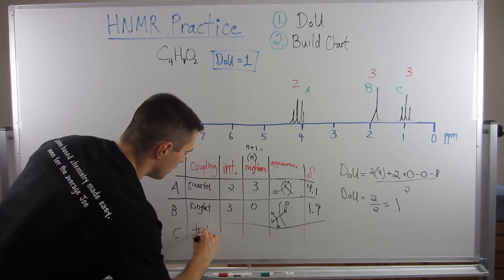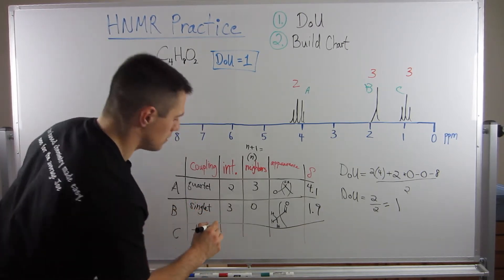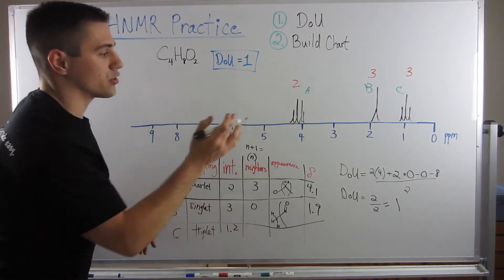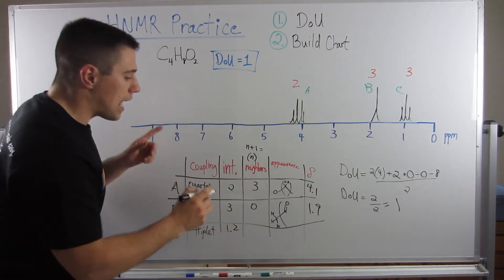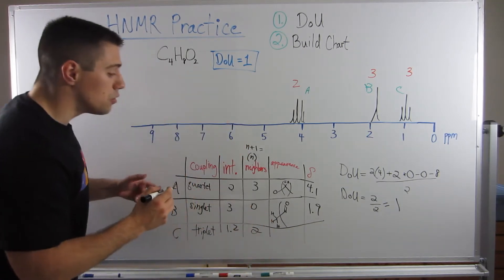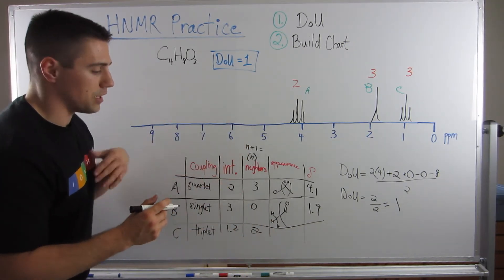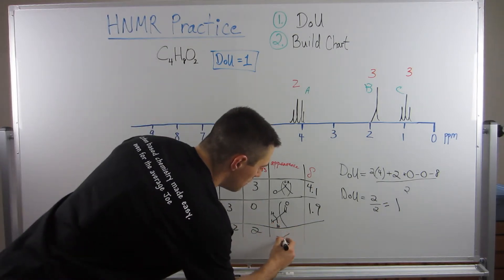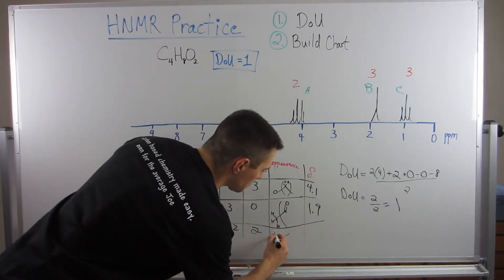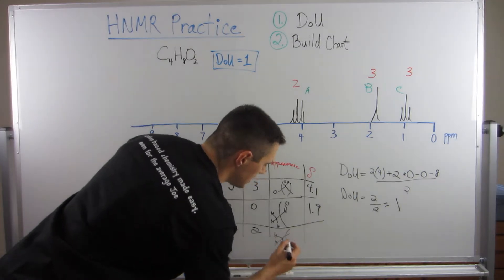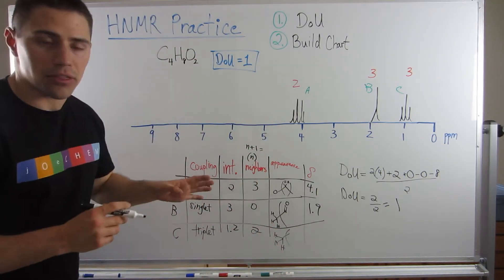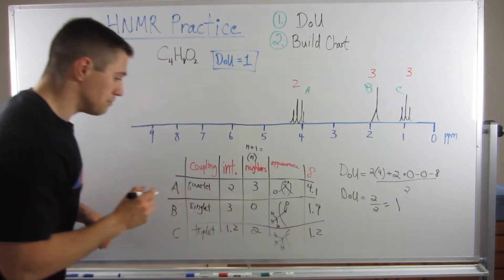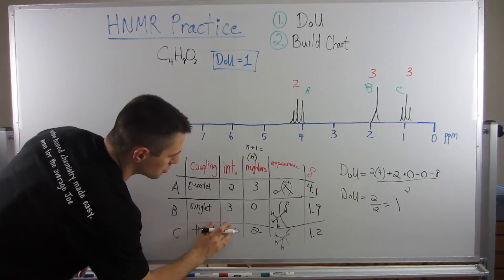Peak C is a triplet, pretty upfield at about 1.0 to 1.2. Since it's a triplet, n+1 = 3, so n = 2 neighbors. This is the classic terminal methyl group pattern. The integration is three. It's very shielded and upfield, consistent with a standard terminal CH3.